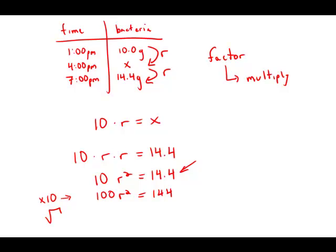Now, I'm going to take a square root. Square root of 100 is 10. Square root of r squared is r. And square root of 144 is 12. Divide by 10 and r equals 1.2.